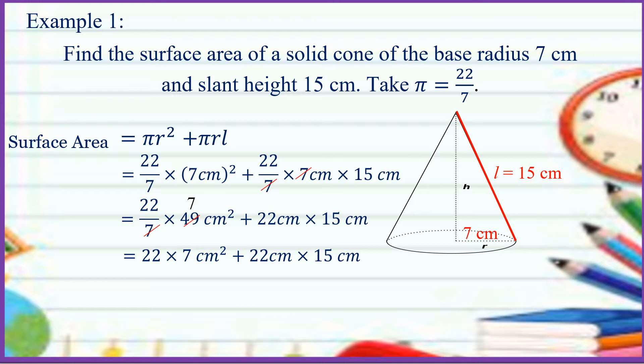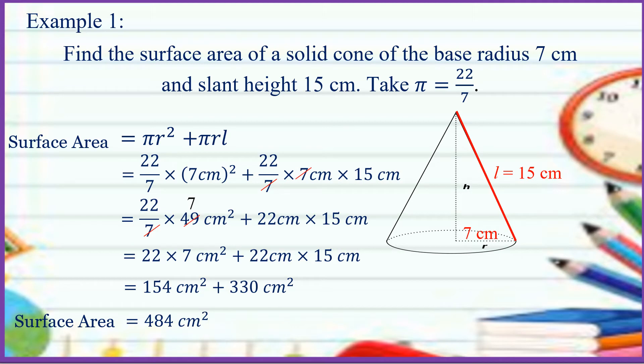22 times 7 equals 154 and 22 times 15 equals 330. So we have 154 square cm plus 330 square cm. Adding them up, the surface area is equal to 484 square cm. That is example number 1.